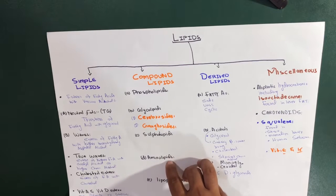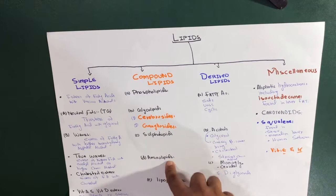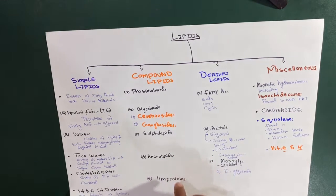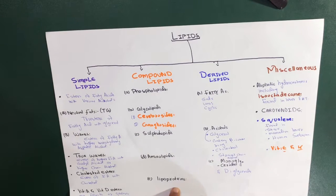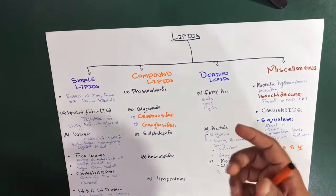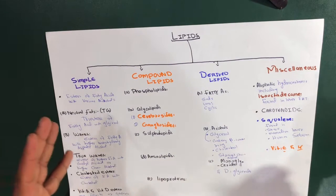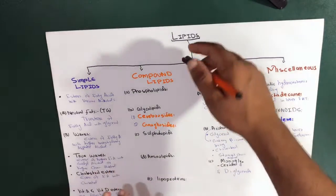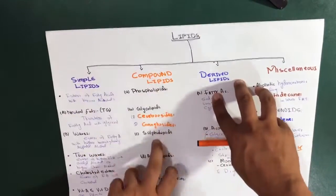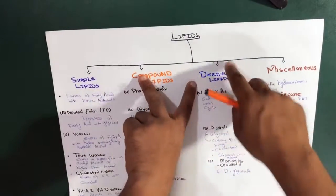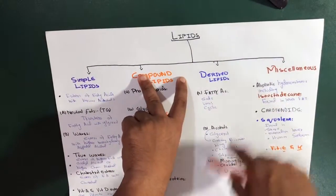Sulfolipids contain a sulfate group. Aminolipids, also called proteolipids, and lipoproteins involve lipids as a prosthetic group to proteins. That covers all the compound lipids.